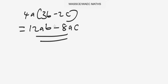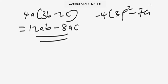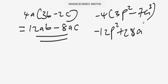Single brackets are easier than double brackets. Here's another example: we have minus 4 and in brackets 3p squared minus 7a cubed, and we're asked to simplify. Minus 4 times 3p squared gives us minus 12p squared. Minus 4 times minus 7a cubed — negative times negative gives positive — so this gives us plus 28a cubed. That's the answer.